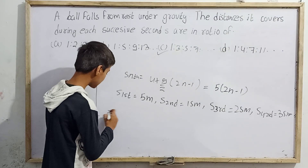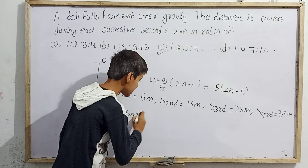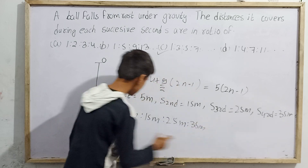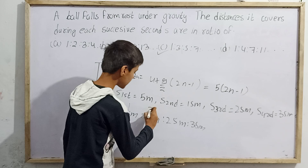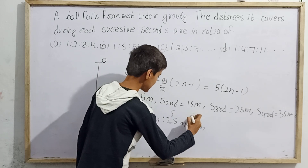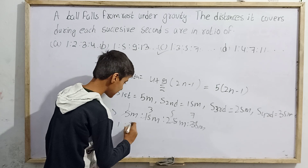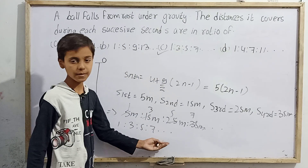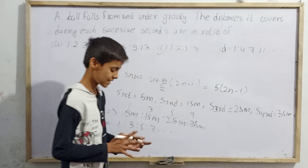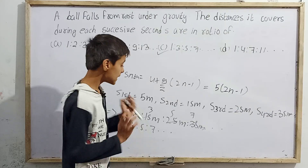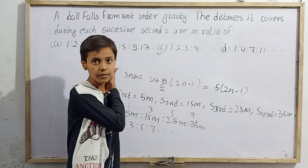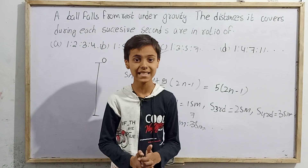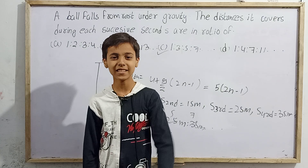The ratio of distances is 5:15:25:35, which simplifies to 1:3:5:7 and so on. Hence option C is the correct answer. So either by Galileo's trick or by the Sₙth equation, you get the same result. This was today's topic — two questions on kinematics covering vertical motion under gravity. Thank you.